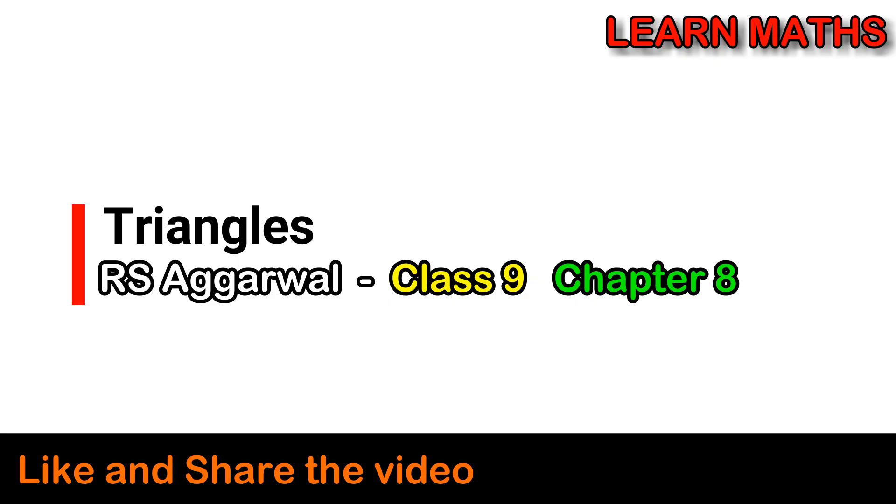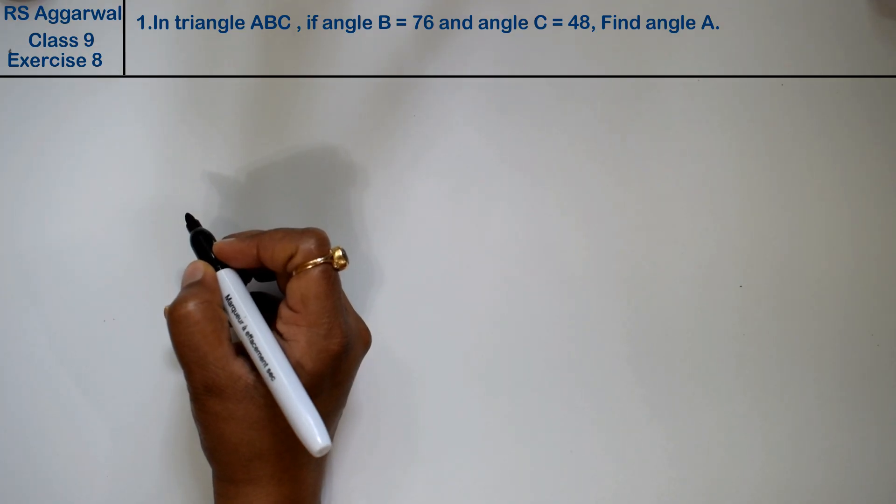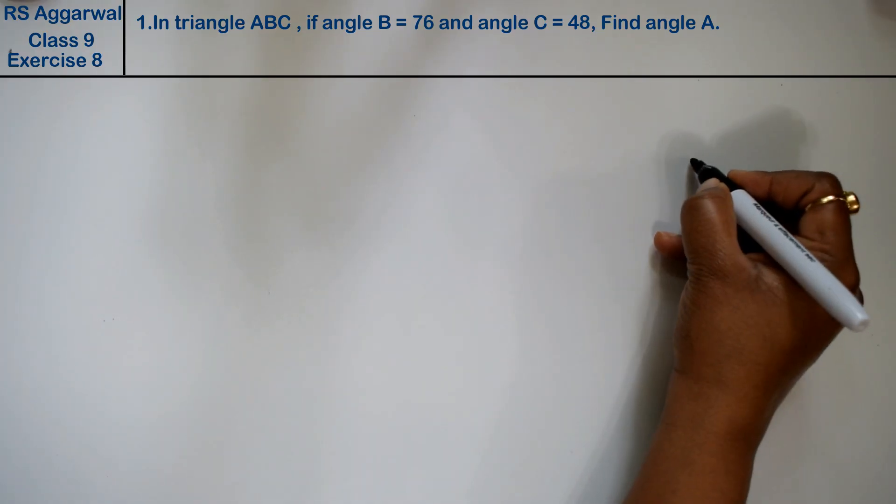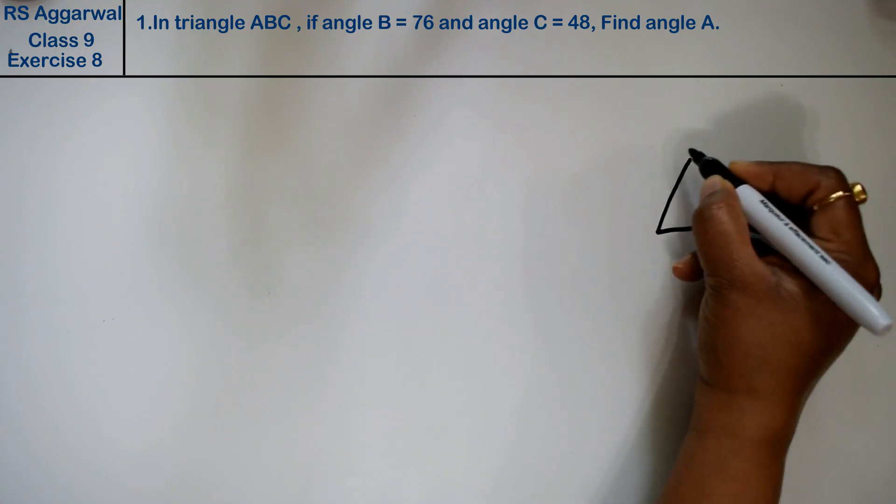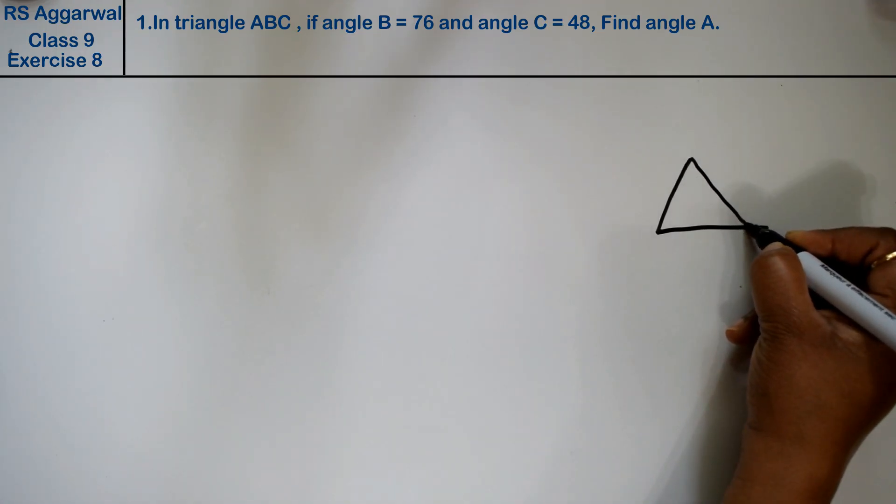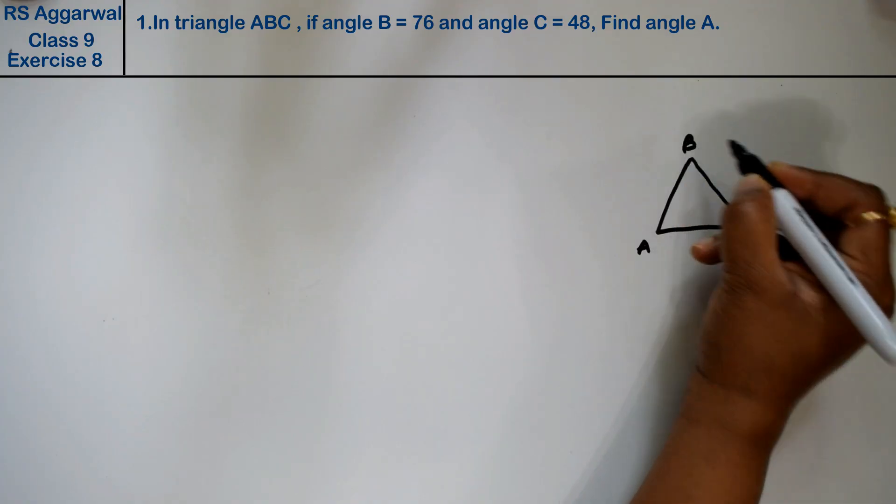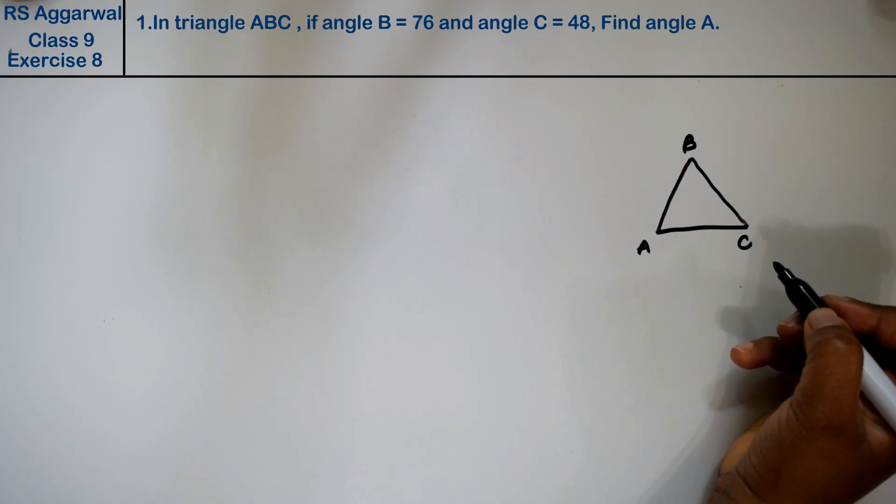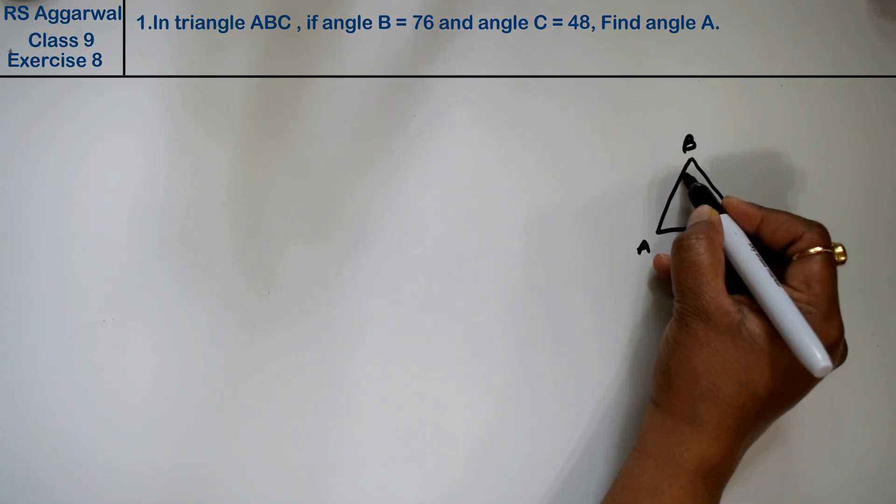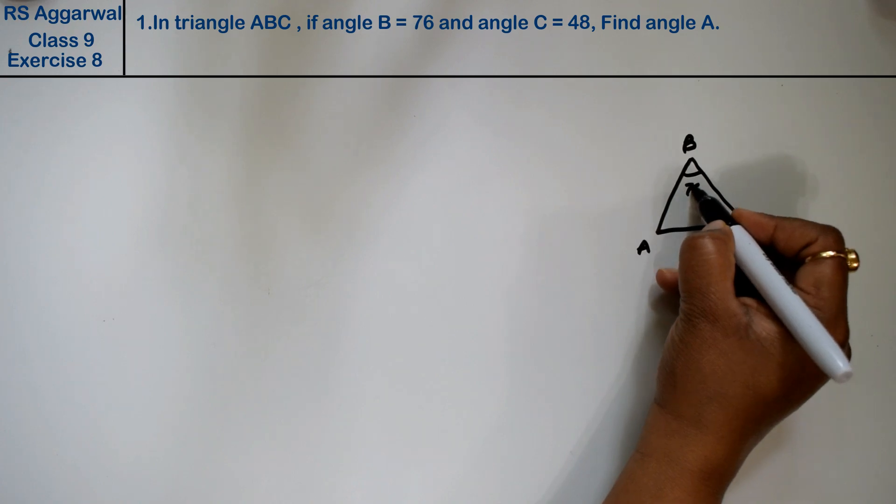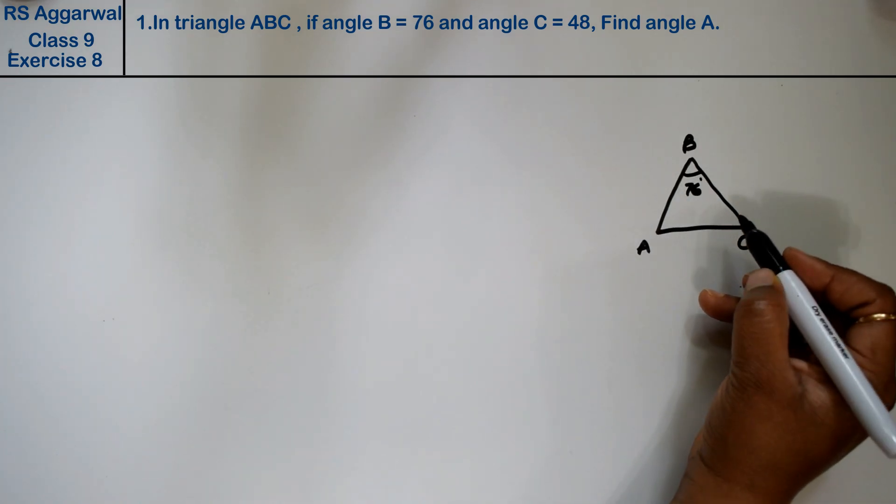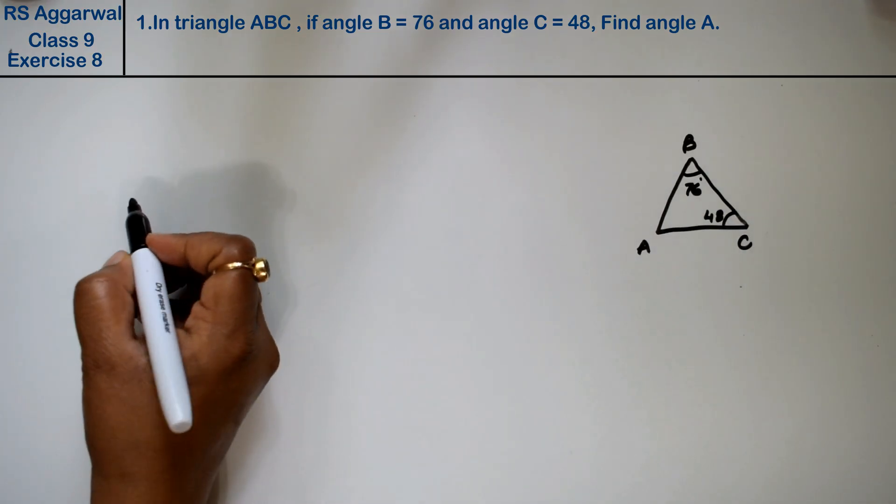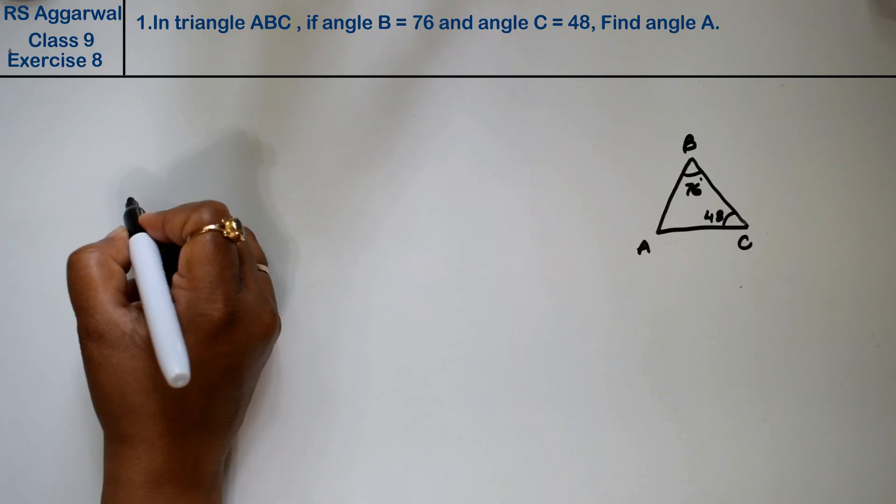Let's do question number 1 of exercise 8, that is triangles. Question number 1 is in triangle ABC. Friends, the figure is very important, so the figure shown is triangle ABC. If angle B is 76 degrees and angle C is 48 degrees, find angle A.